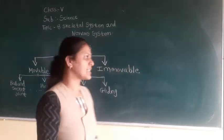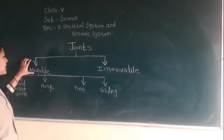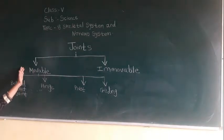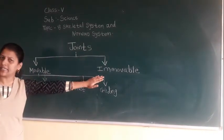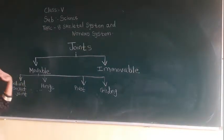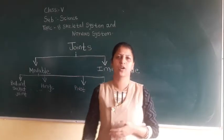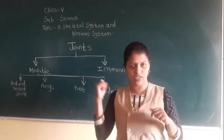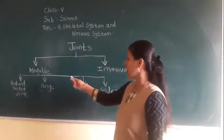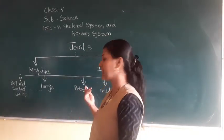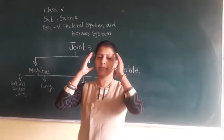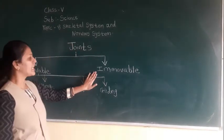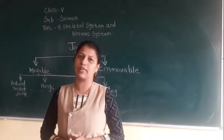Joints are mainly classified into two types: movable and immovable. Movable joints are those which can be moved — for example, our hands and legs move continuously. Immovable joints are fixed — for example, the skull bones are fixed, so the skull is an immovable joint.